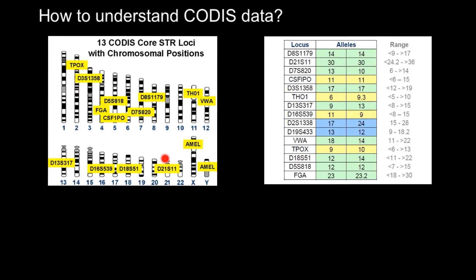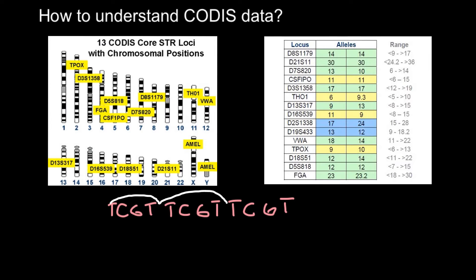All the remaining 13 loci have STRs — short tandem repeat sequences. Here is an example: if we take a locus, we may have a repeat such as T, C, G, T that repeats over and over again — T, C, G, T, T, C, G, T. This is the core sequence, and as you can see, it has repeated here three times. That's what we call short tandem repeats.